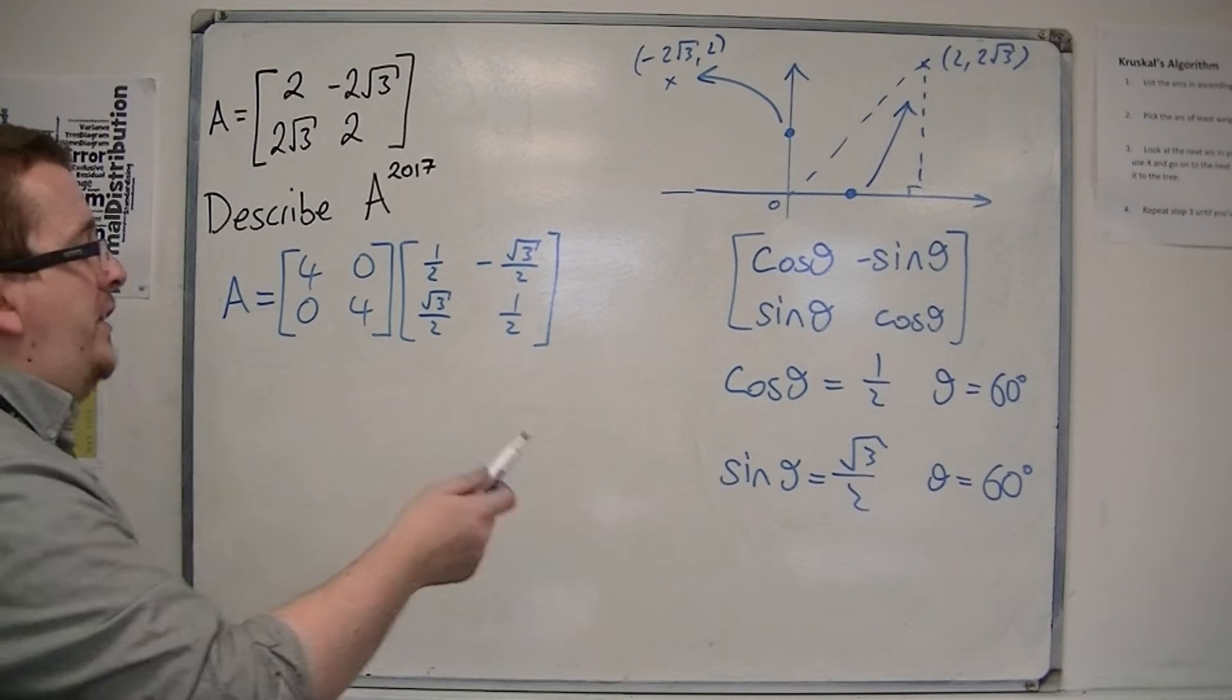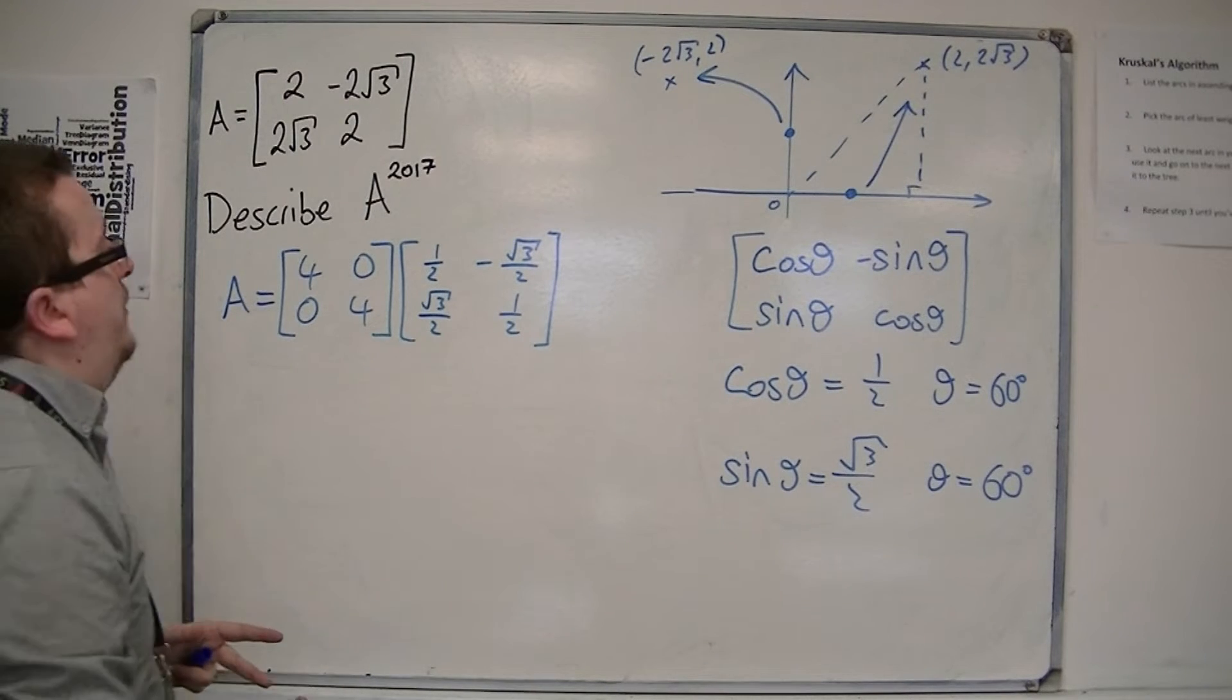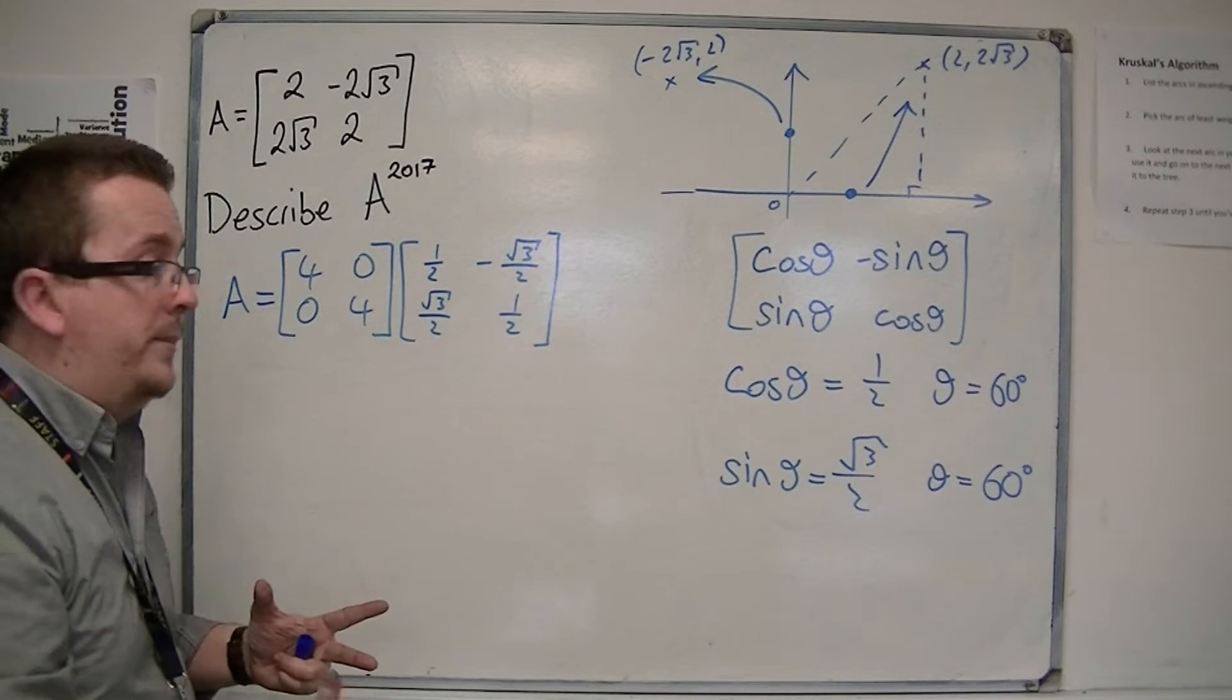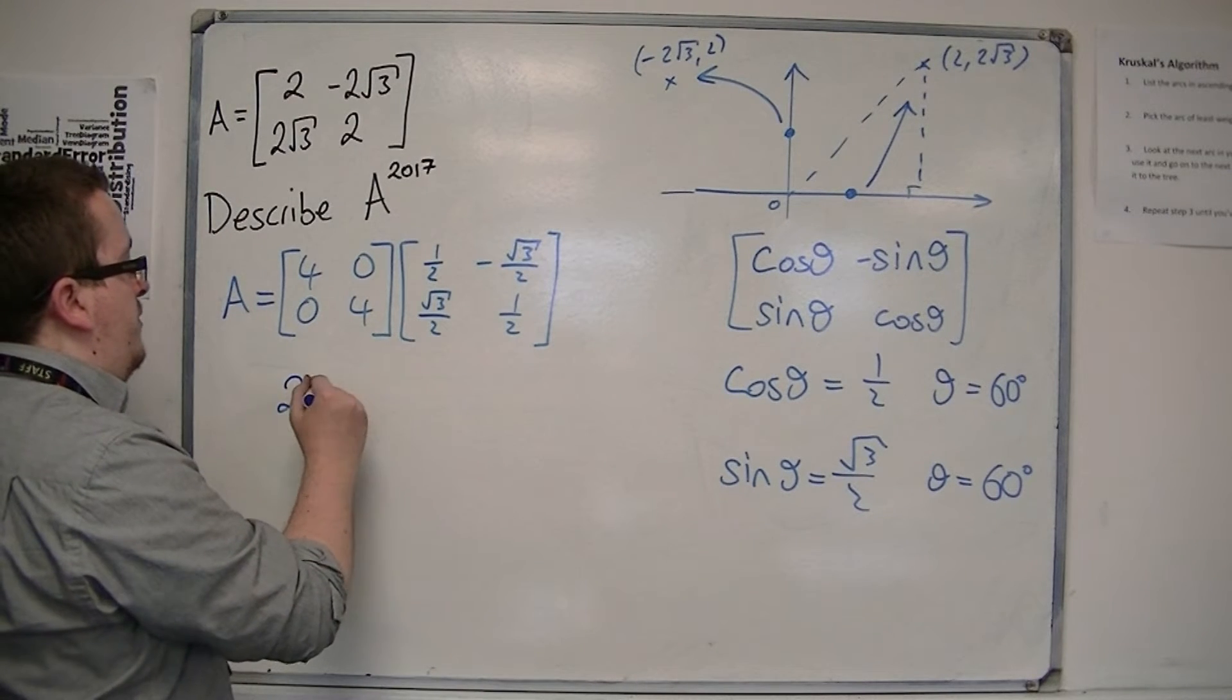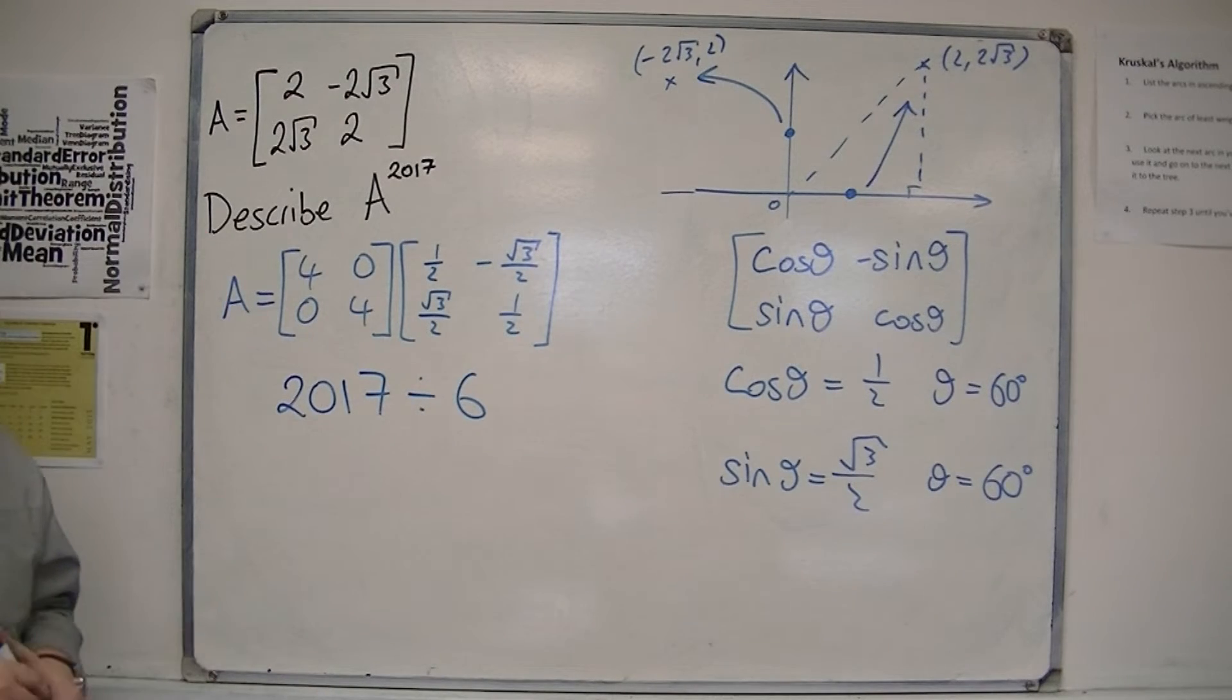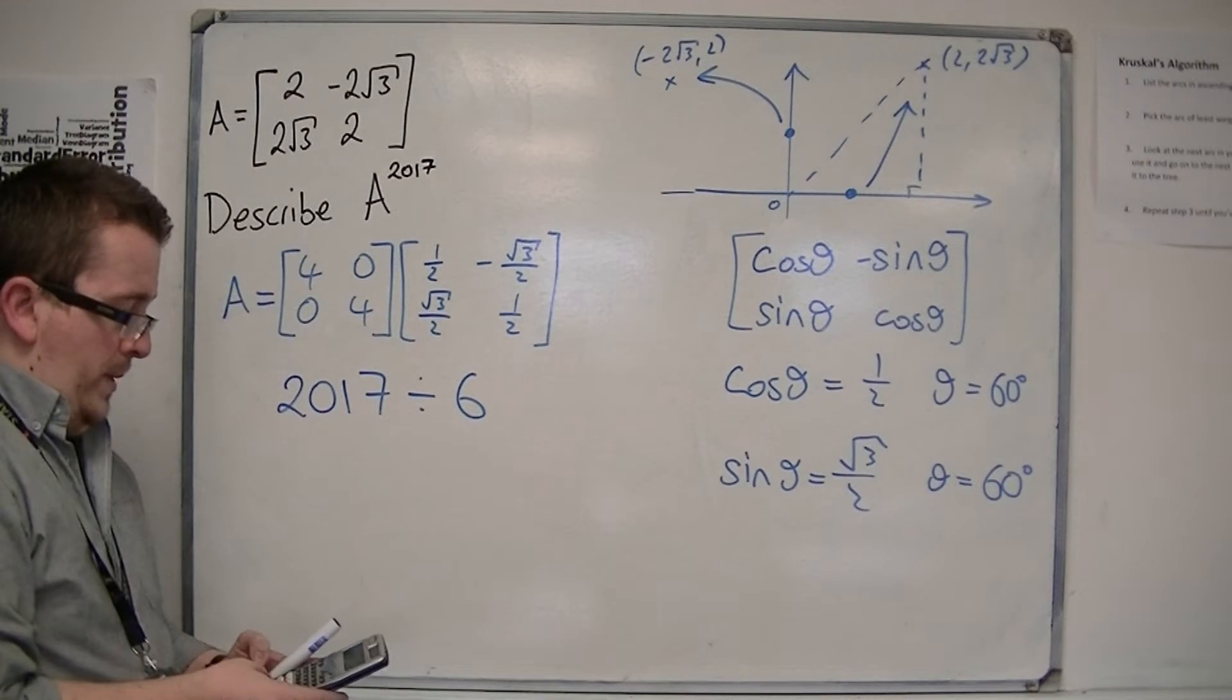So, 60 degrees goes into 360, 6 times. So, if I'm going to apply this 2017 times, if I look at 2017 and divide that by 6, because that's how many times 60 degrees goes into 360,